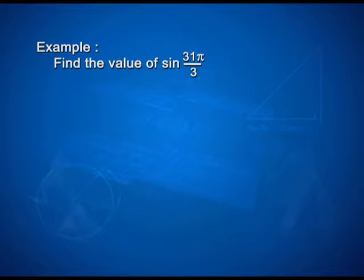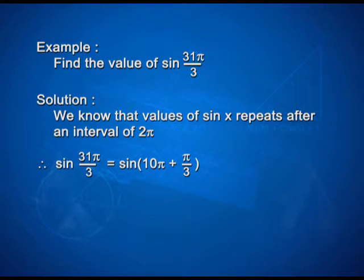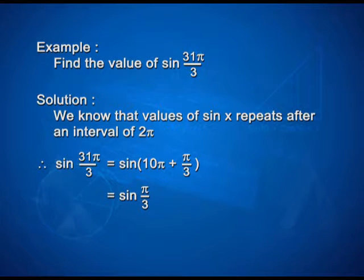Let us take one more example: find the value of sin(31π/3). Solution: we know that values of sin x repeat after an interval of 2π. Therefore, sin(31π/3) can be written as sin(10π + π/3), which is equal to sin(π/3), and its value is root 3 upon 2.